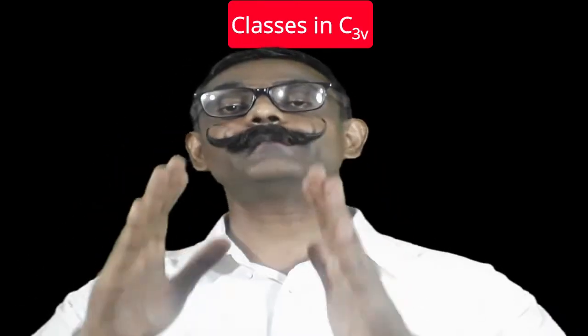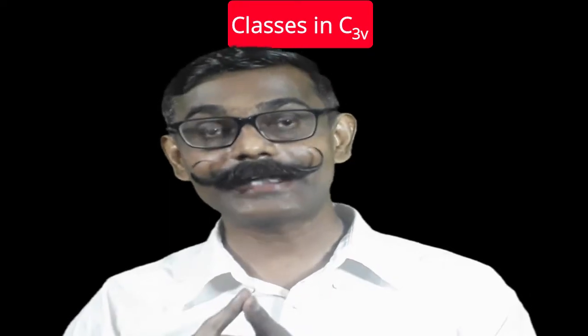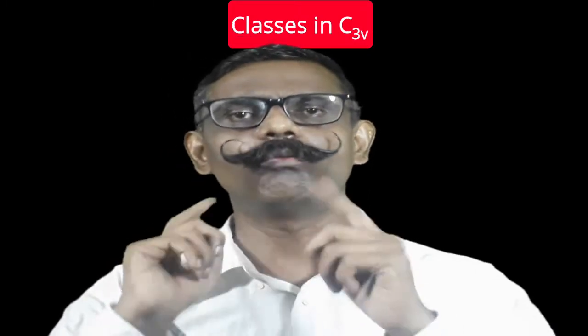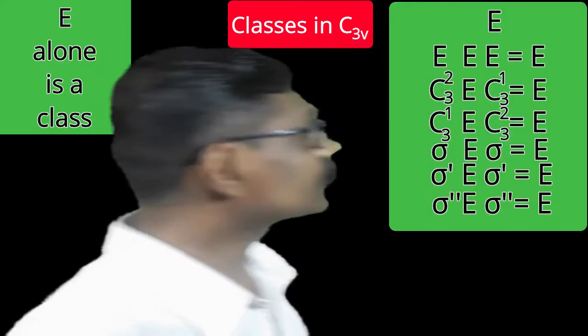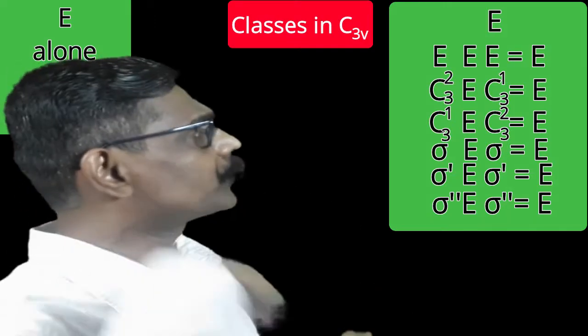We apply this concept to describe the classes present in the C3v point group. In C3v there are a total of six operations: identity, C3¹, C3², sigma, sigma-dash, and sigma-double-dash — all vertical planes. Let us consider identity first.